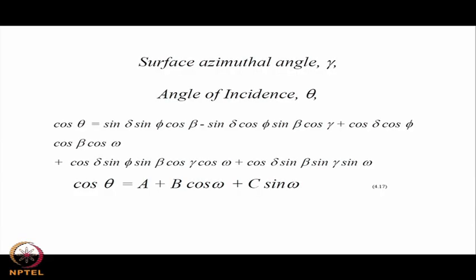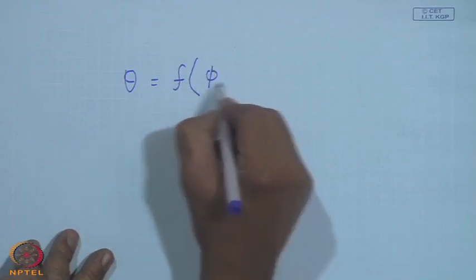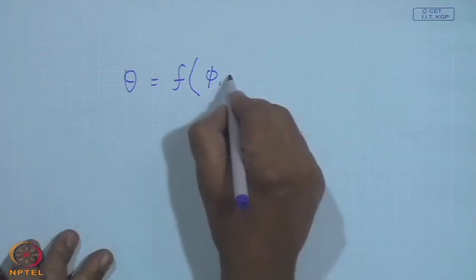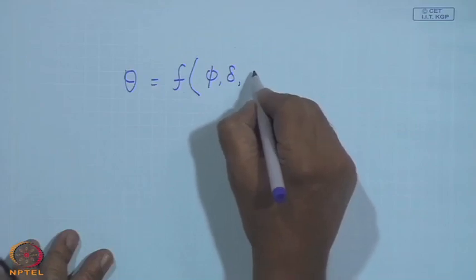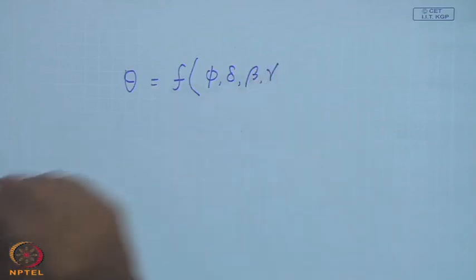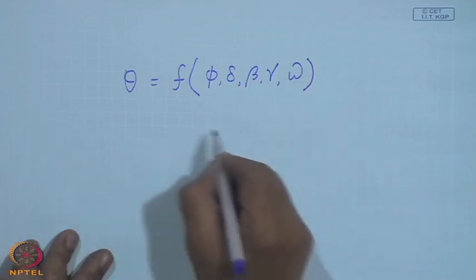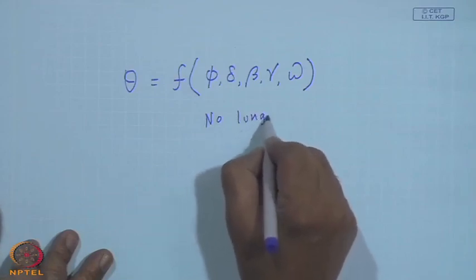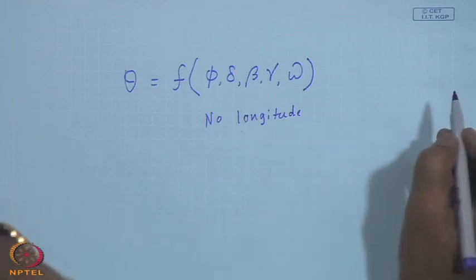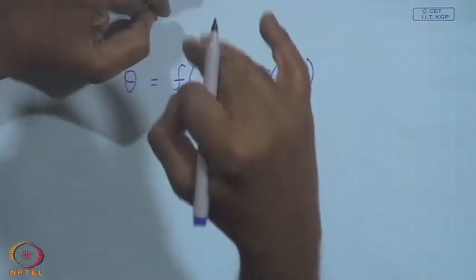The surface azimuthal angle is gamma, and the general angle of incidence is theta. We expect theta to be a function of: latitude (where you are), declination (what day it is), slope beta, azimuthal angle gamma (surface orientation), and hour angle omega. Notably, longitude does not appear — because a location at another longitude will occupy the same relative position to the sun after the Earth rotates by the corresponding time. So all locations at the same latitude experience the same angle of incidence at corresponding times.